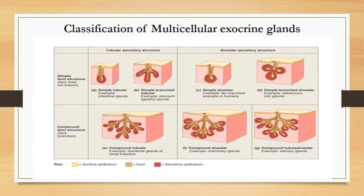This classification shows the different types of multicellular exocrine glands. In simple glands, the duct is single and not branching, although the parenchyma may branch. A single duct with tube-like secretory portion is a simple tubular gland — for example, intestinal glands. If the duct is single but the secretory portion branches and is tube-like, we call it simple branched tubular glands, for example gastric glands of the stomach.